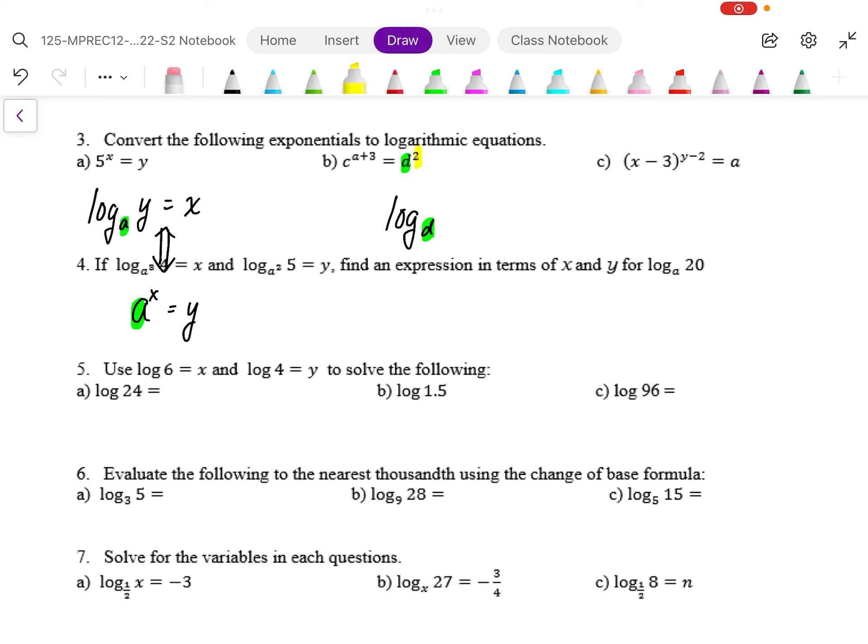And I need to have an exponent. There's my exponent. And I need to have an argument. There's my argument. So the argument is going to go inside the log: c to the power a plus 3. There's my argument. And then it needs to equal the exponent of 2.